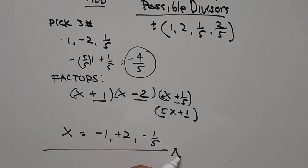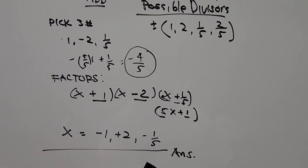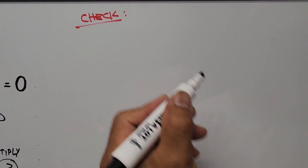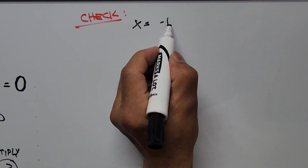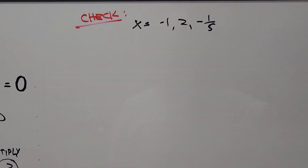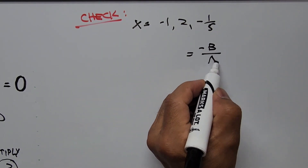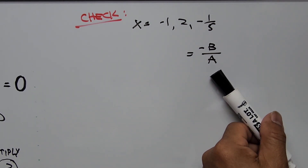Now, how can we be sure our answers — x = −1, x = 2, and x = −1/5 — are correct? To check, we add all the values of x and equate the sum to negative b over a from the standard form. Going back to our equation, b is 4 and a is 5, so negative b over a equals negative 4/5.